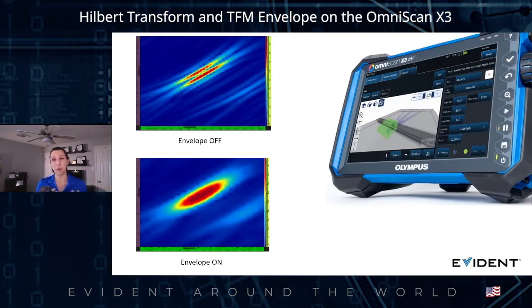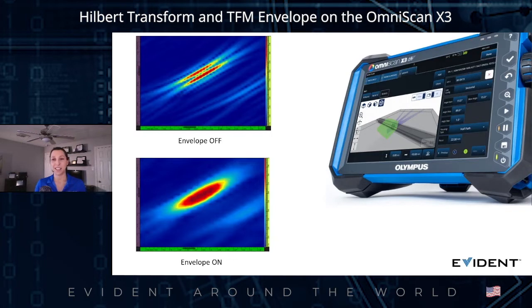The thing is, TFM envelopes are not all created equal. At first glance, an envelope may look like a smoothing filter, as the signal suddenly appears smoother and where two echoes, like we have here in this example, seem to merge or blur into one. This is why this video may help in understanding the difference between general smoothing filters, envelopes, and TFM envelopes from the OmniScan X3, which uses a signal processing called Hilbert Transform.